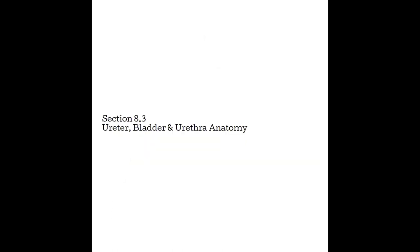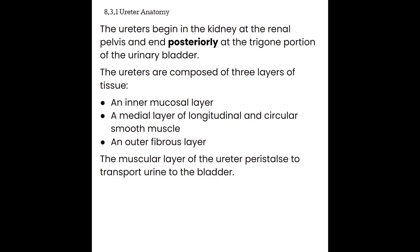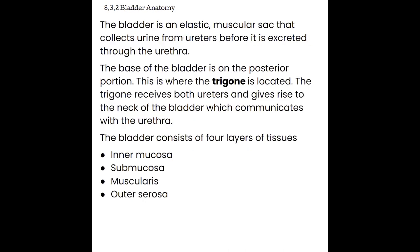Section 8.3: Ureter, Bladder, and Urethra Anatomy. The ureters begin in the kidney at the renal pelvis and end posteriorly at the trigone portion of the urinary bladder. The ureters are comprised of three layers: the inner mucosal layer, a medial muscular layer, and an outer fibrous layer. It is that muscle layer that provides peristalsis — rhythmic contractions to move urine from the kidney to the bladder. Once in the bladder, which is a very stretchy, elastic, muscular sac, it holds onto that urine collected from the ureters before excreting it through the urethra.